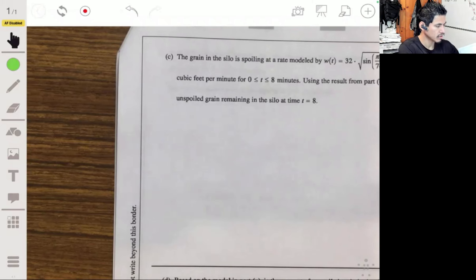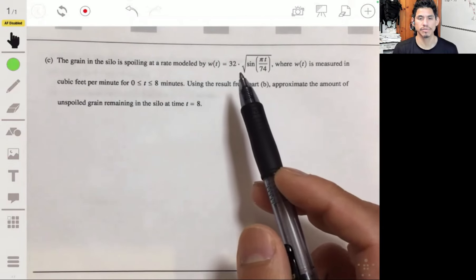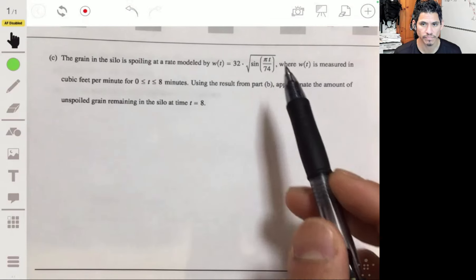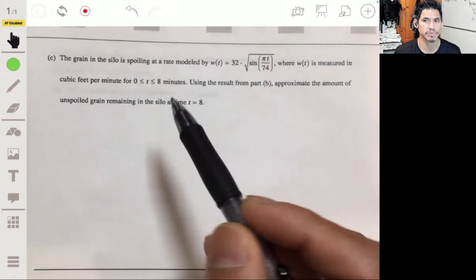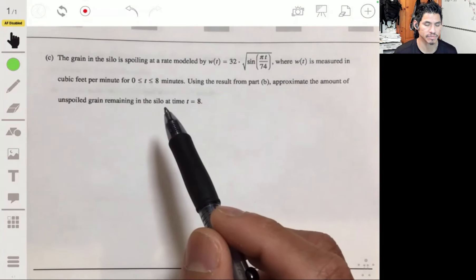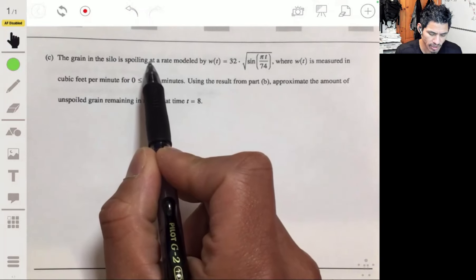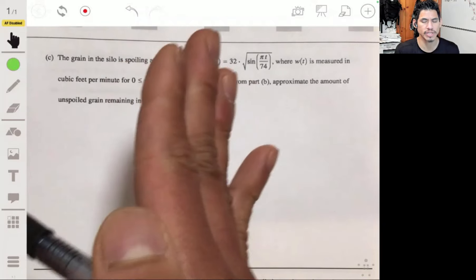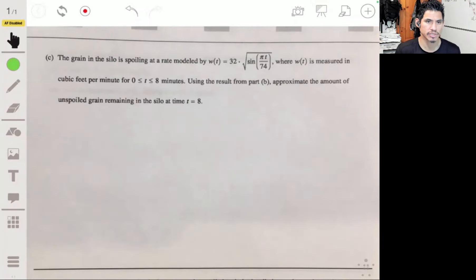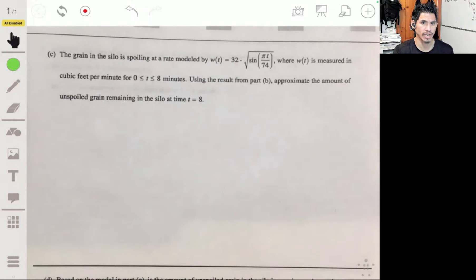All right, we're going to part C. We have the grain in the silo is spoiling at a rate modeled by W of T equal to 32 times the square root of sine of pi T over 74. Where W of T is measured in cubic feet per minute for T between zero and eight minutes. Using the result from part B, approximate the amount of unspoiled grain remaining in the silo at time T equals eight. Okay, so the idea here is to recognize that since this is telling you the rate at which the grain is spoiling, if we were to take the integral of the total amount of grain added, and then from that subtract the total amount of grain spoiling, that's going to give you the total amount of grain that's going to be unspoiled.